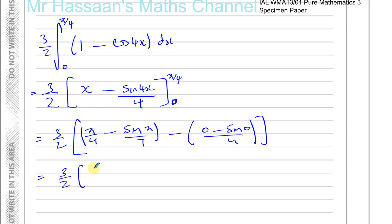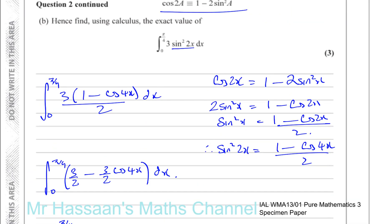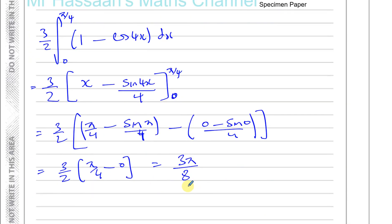Since sine of 0 is 0 and sine of π is also 0, the second bracket becomes 0. So we end up with 3/2 times π/4, which gives 3π/8. The question asks for the exact value, so we leave the answer in this form — do not round to 3 significant figures. The exact value is 3π/8.